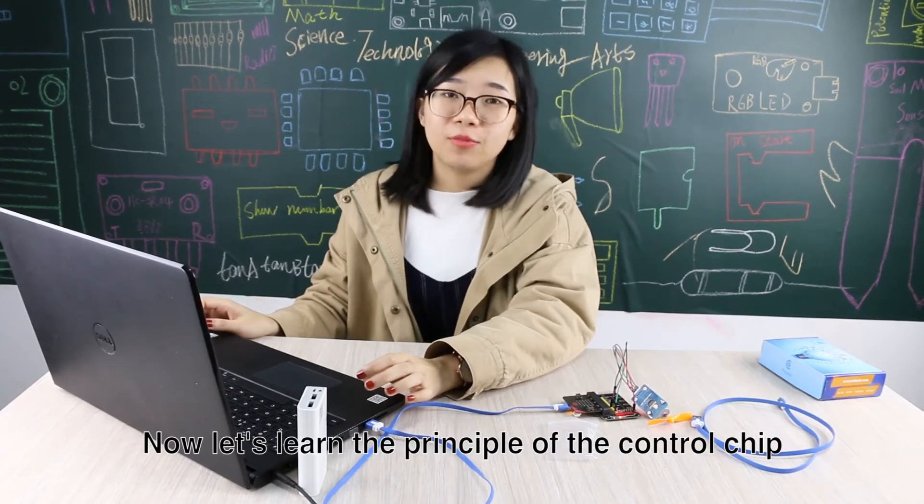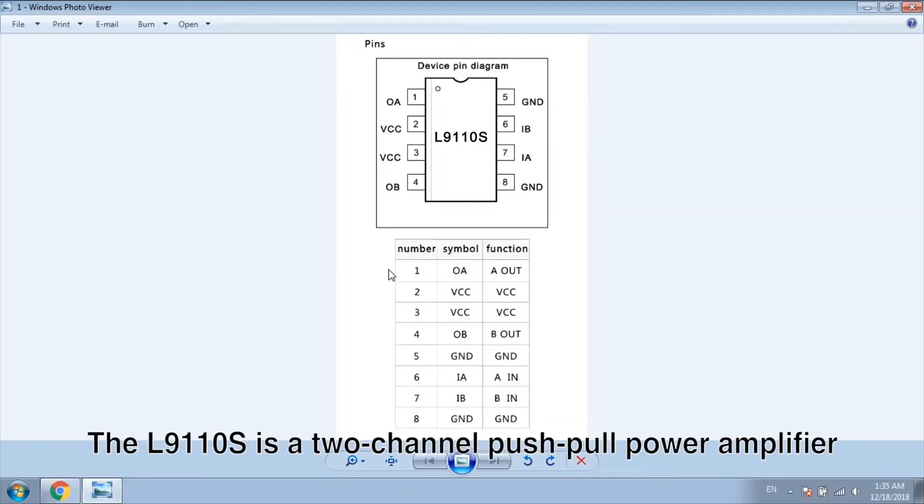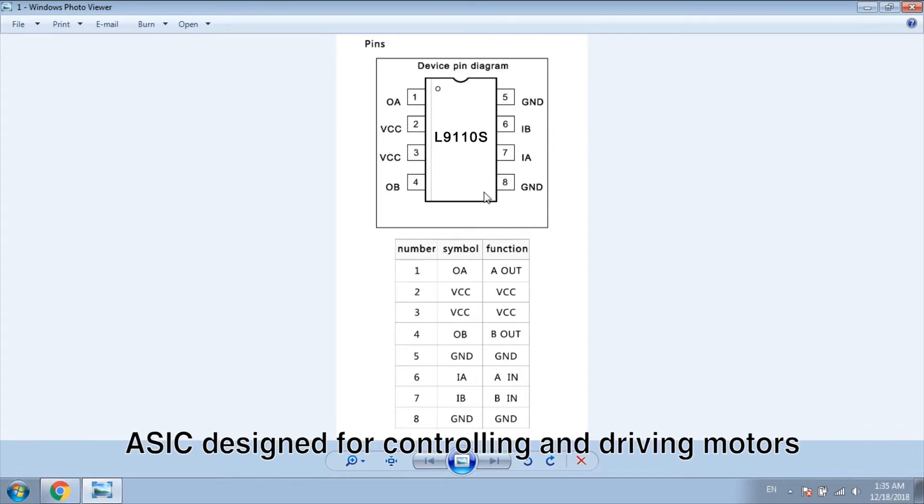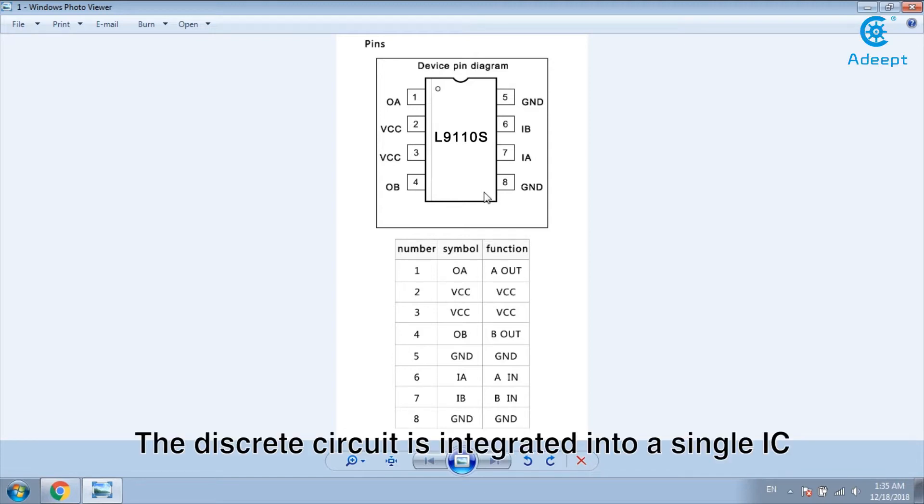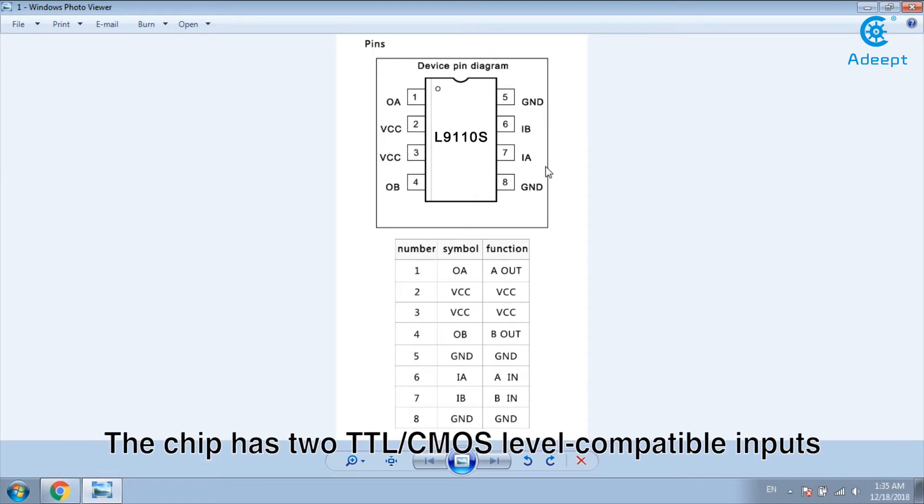Now let's learn the principle of the control chip. The L9110S is a 2-channel push-pull power amplifier designed for controlling and driving motors. The discrete circuit is integrated into a single IC to reduce peripheral device costs and improve overall reliability. The chip has two TTL-CMOS-level compatible inputs which have good anti-interference performance.